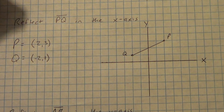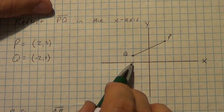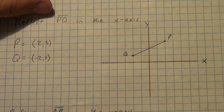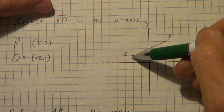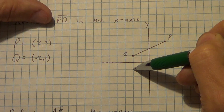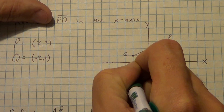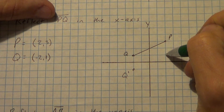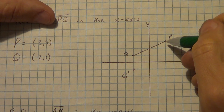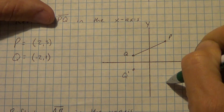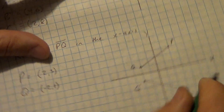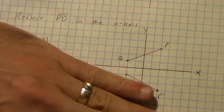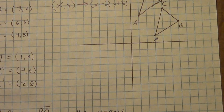Now keep in mind, when you do a reflection, you have to move perpendicular to your line of reflection the same distance. Since the x-axis is horizontal, I need to move vertical. Q is one space away from the x-axis, so I'm going to go one space away on the other side and put a dot — call that Q prime. P is three spaces away, so I move three spaces away, and that's P prime. Now I connect them.